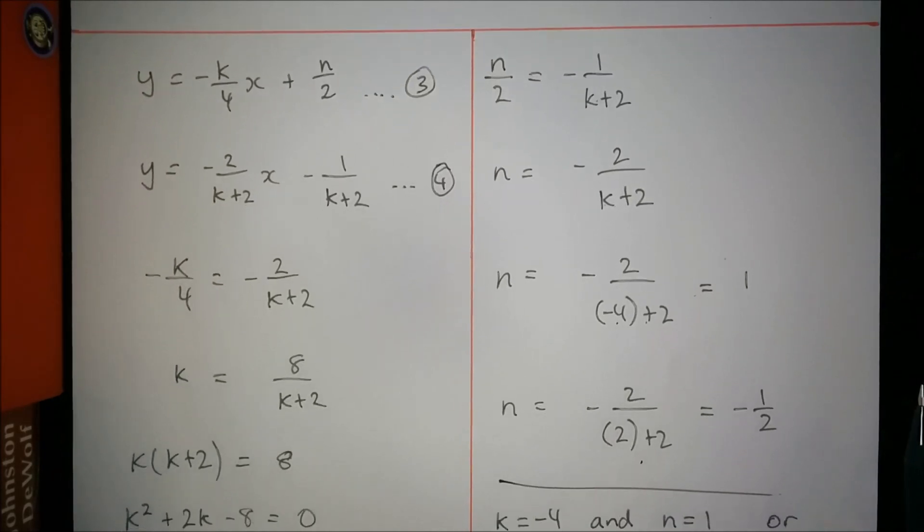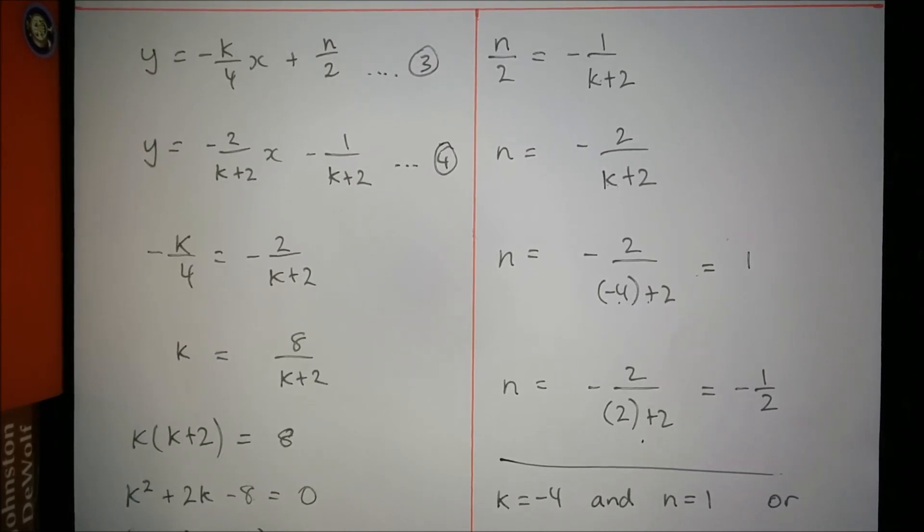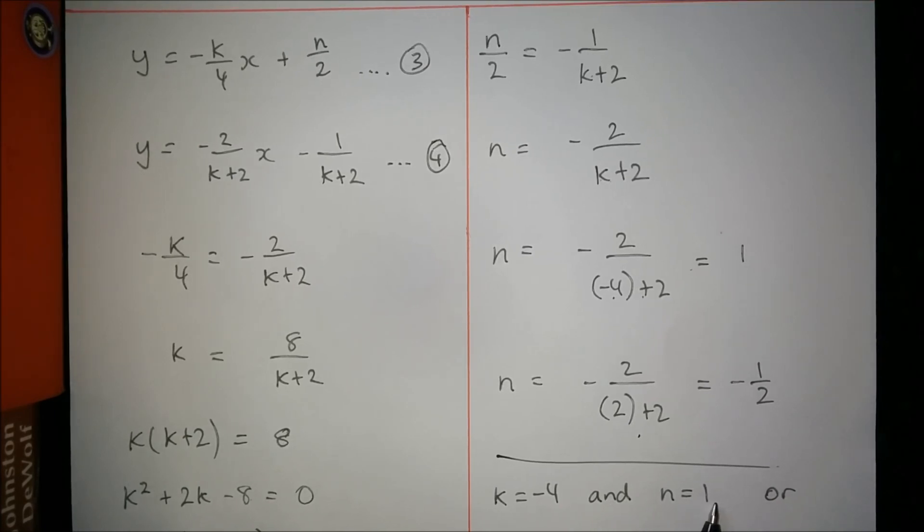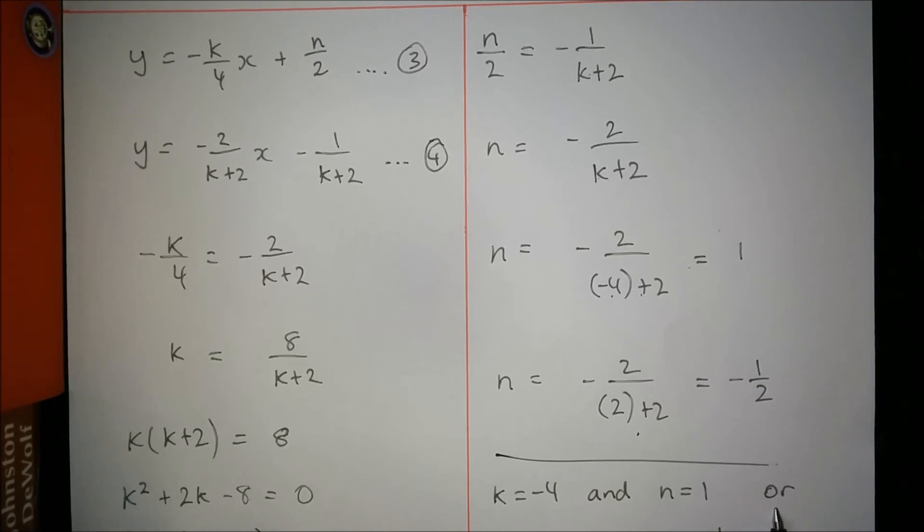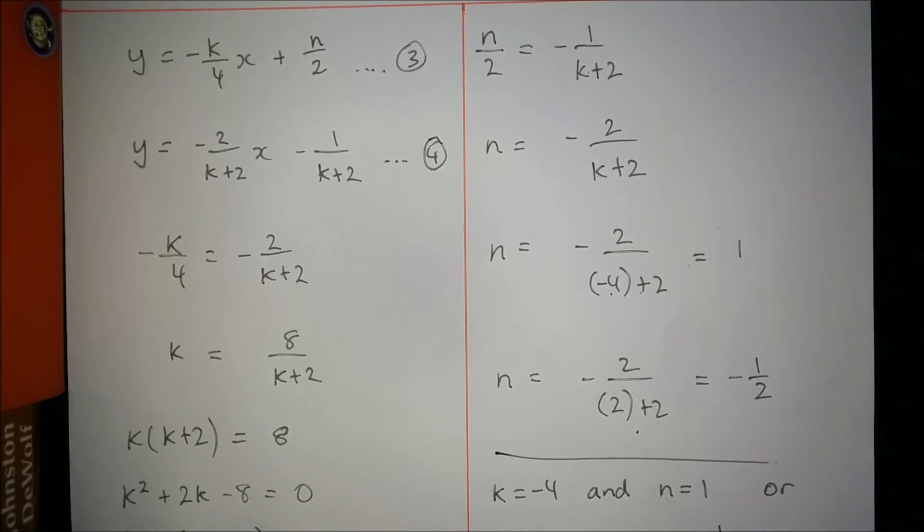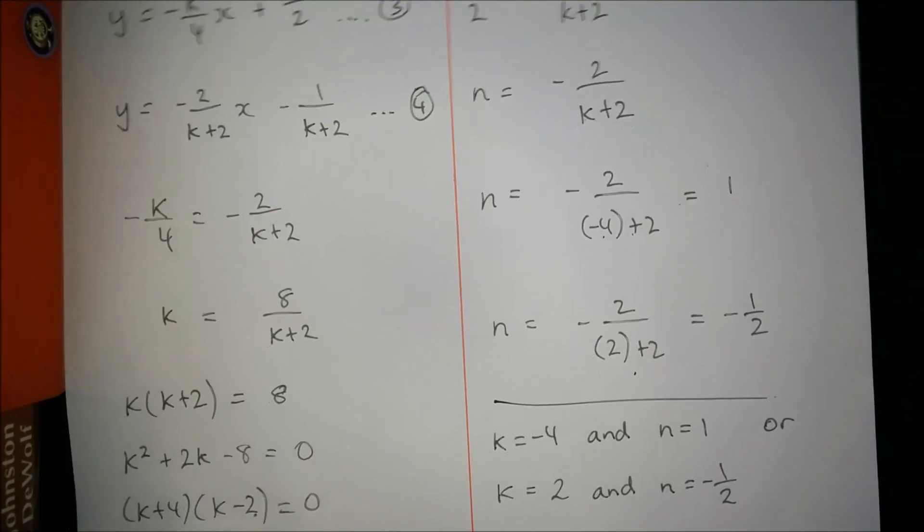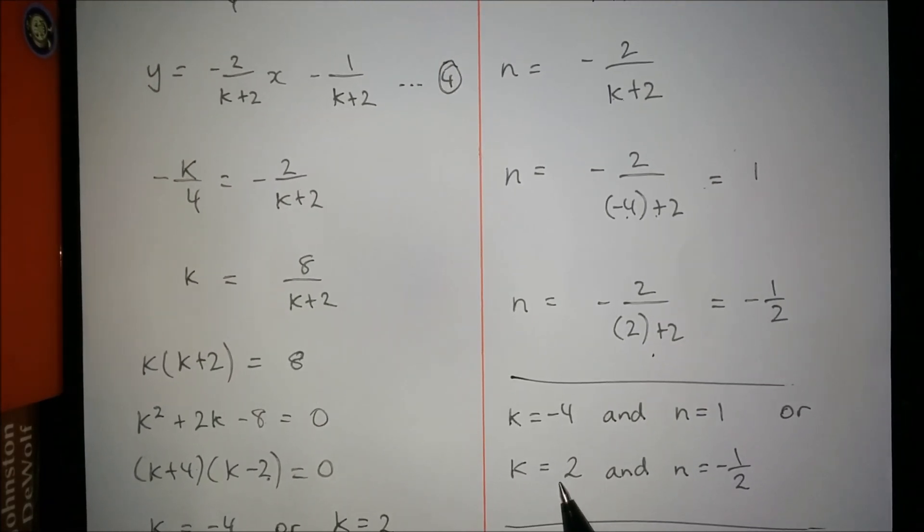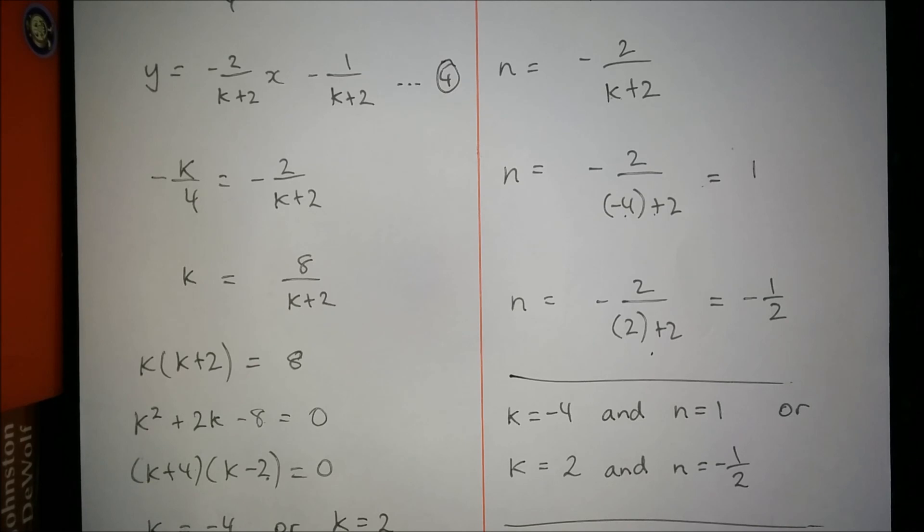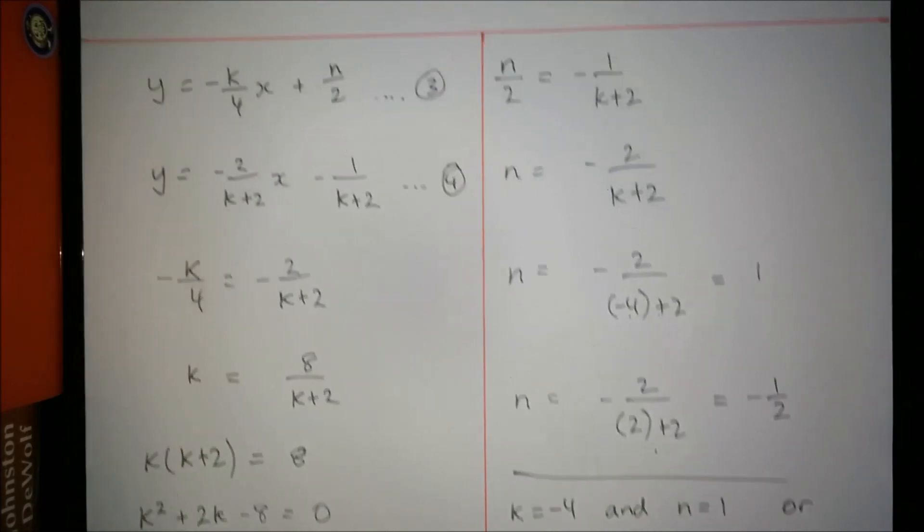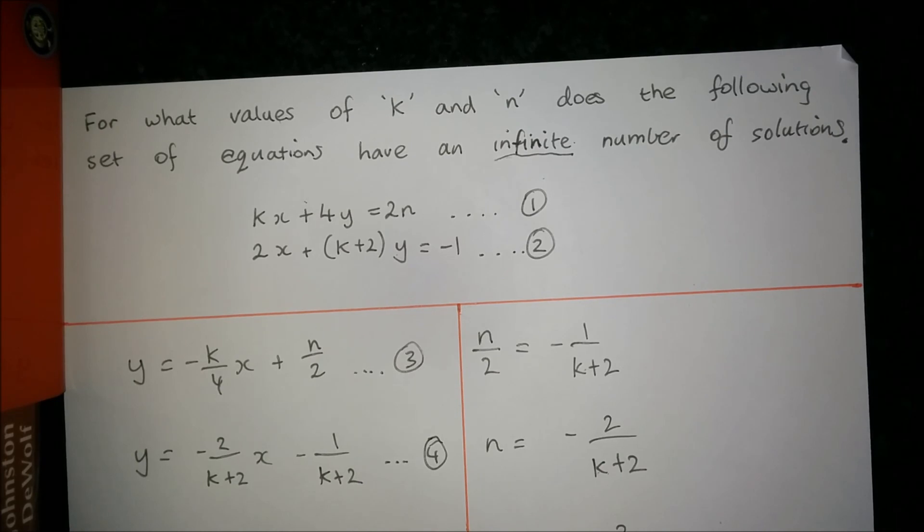All you have to do now is write down your answer properly. So one set of possibilities was k equals negative 4 and n equals 1. Or, now it's important that you say or, because that separates these two. You can't have k equals negative 4 and n equals any other number. So you have to write it like this. When you substituted k equals 2, you got n equals negative 1 half. So that has to be written like this, k equals negative 2 and n equals negative 1 half. And it all just separates those two possible sets of solutions. And that's how you do this question about simultaneous equations. Thank you.